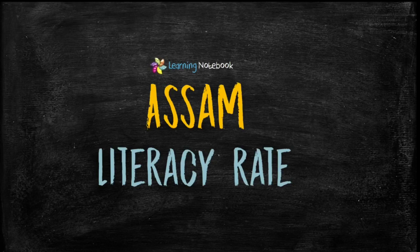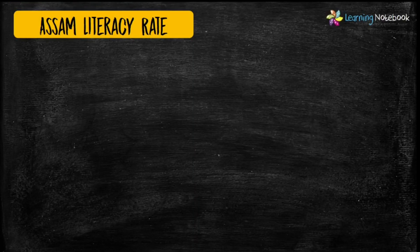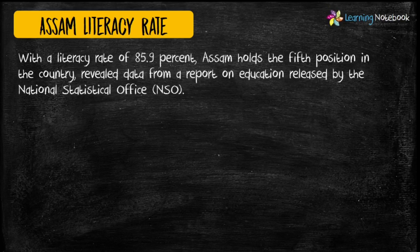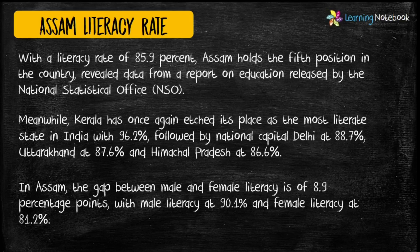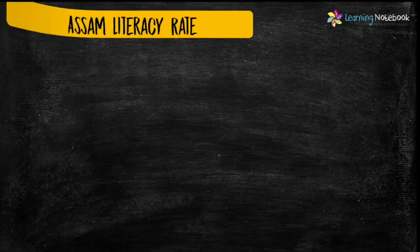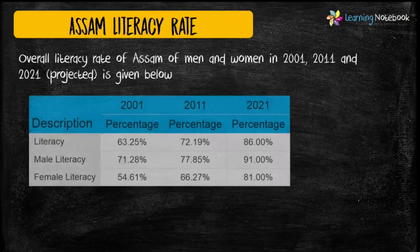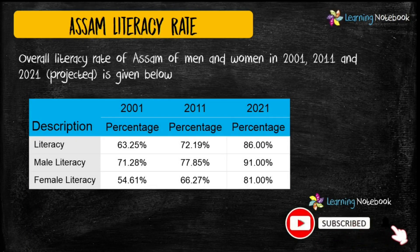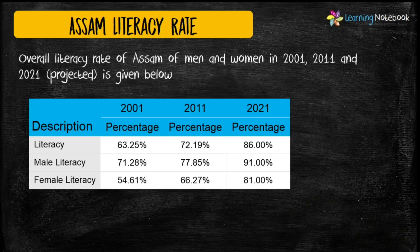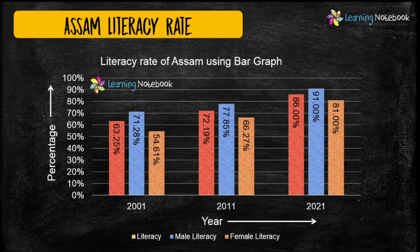The next idea is depicting the literacy rate of Assam. Here, we have used a triple bar graph to show the overall literacy rate, male and female literacy rate.